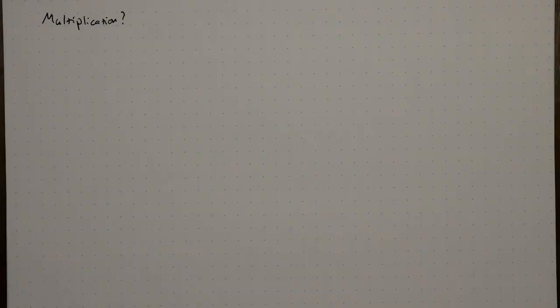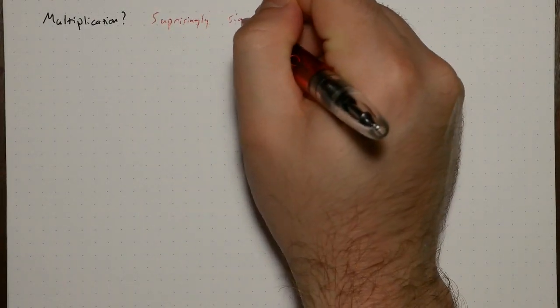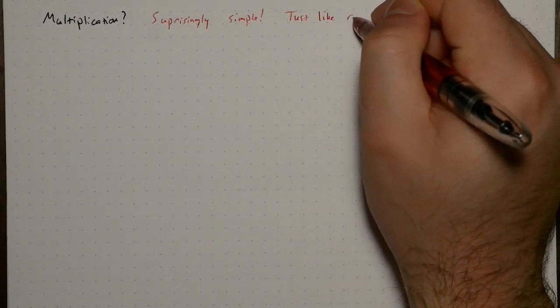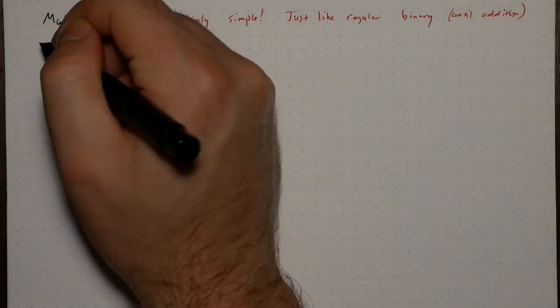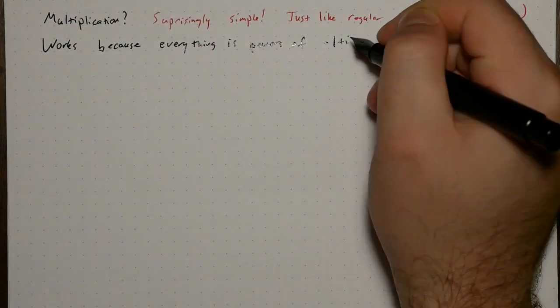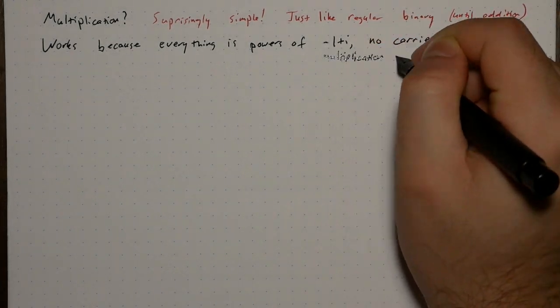What about multiplication? It's surprisingly simple. It's just like binary multiplication, until the summation step. In binary, you never get a carry from the multiplication step. Here, I've done a little multiplication note for you.